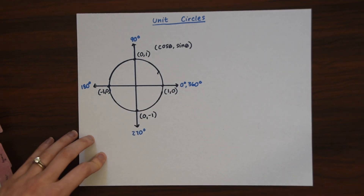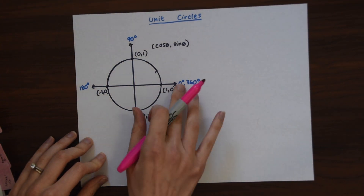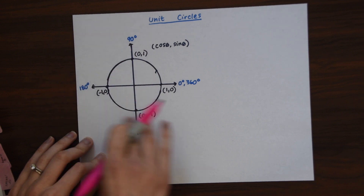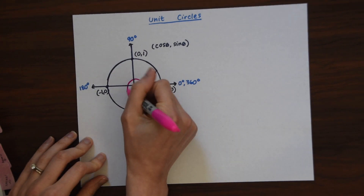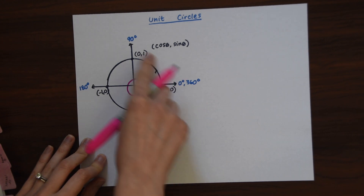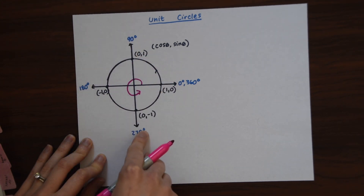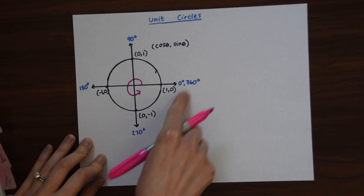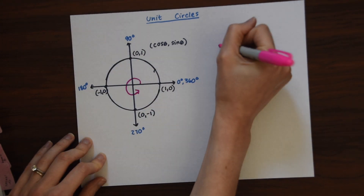Another important thing to notice about unit circles is that they use degrees that go all the way around the axis. It goes in this counterclockwise direction, so we start at 0 degrees, go to 90 degrees, 180, 270, and then 360. So we make a full circle counterclockwise.